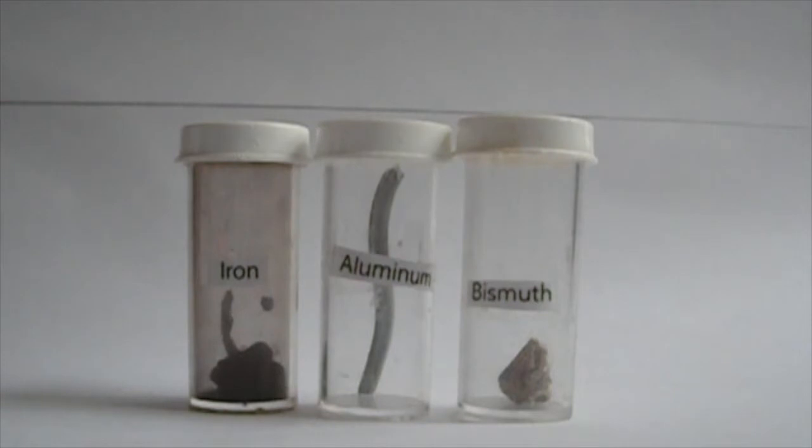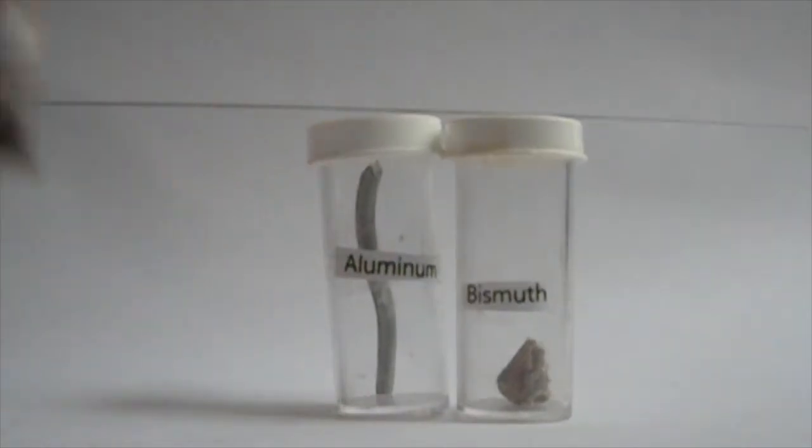These three metals that you see on screen are examples of the three kinds of magnetism: ferromagnetism, paramagnetism, and diamagnetism. Let's start with ferromagnetism. Iron is the most ferromagnetic substance, which is why it's called ferromagnetism.